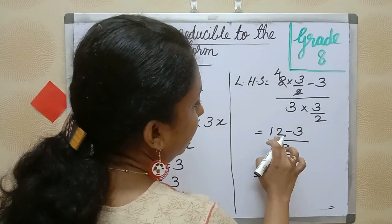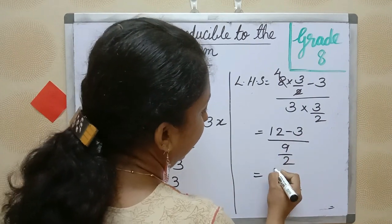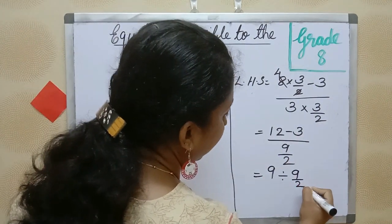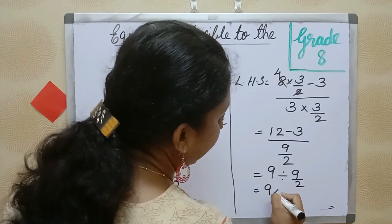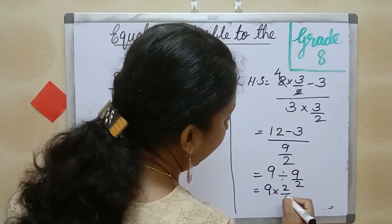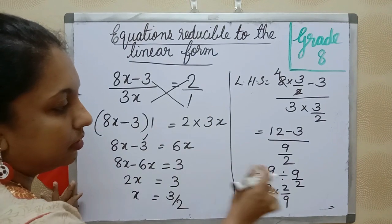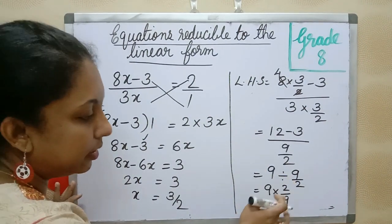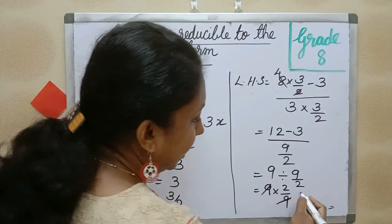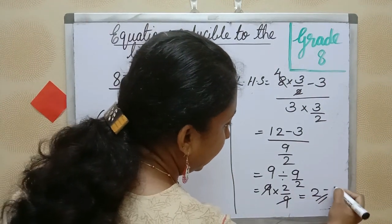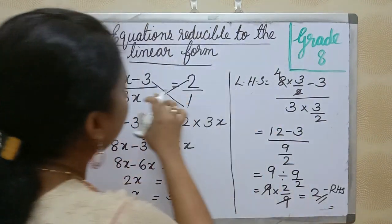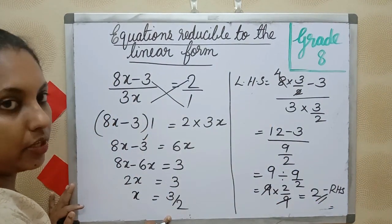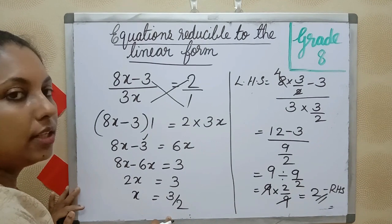That is equal to 9 divided by 9 by 2. That is 9 into 2 by 9. Taking reciprocal, 9 cut, and answer is 2. That is RHS. So LHS is equal to RHS. So our answer is correct. x is equal to 3 by 2.